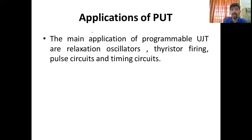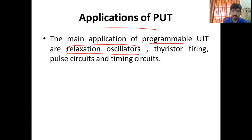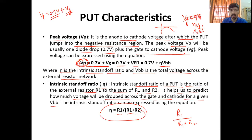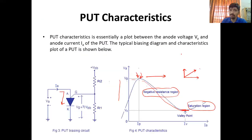Main applications of programmable UJT are: relaxation oscillator, thyristor firing, pulse circuit, and timing circuit। This is all about PUT। इसके regarding अगर आपको कोई problem है, आप online session में या comment section में नीचे पूछ सकते हैं। Thank you so much।